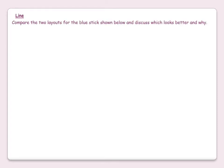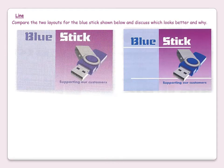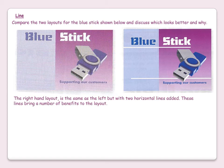Compare the two layouts for the blue stick shown below and discuss which looks better and why. As you can see in the layout, they're basically the same, although the one on the left is a slightly lower quality image. Apart from a white line has been added below the blue stick heading and just slightly above the supporting text. The right-hand layout is the same as the left but with two horizontal lines added. These lines bring a number of benefits to the layout.